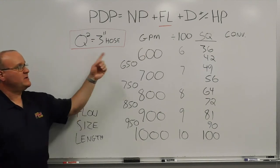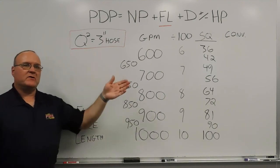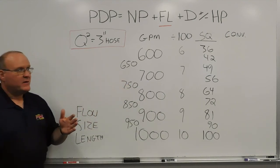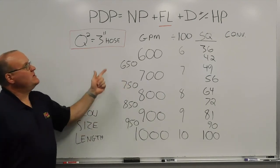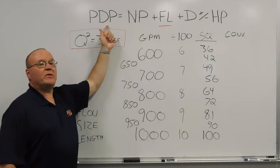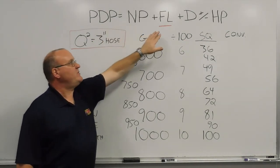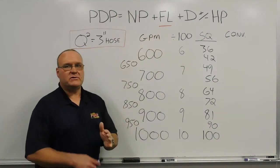We're continuing on with our Hydraulic Series and we're continuing to talk about the hand method for determining friction loss to use in our formula here to obtain our required pump discharge pressure. Again, this is specifically the friction loss element using the hand method.